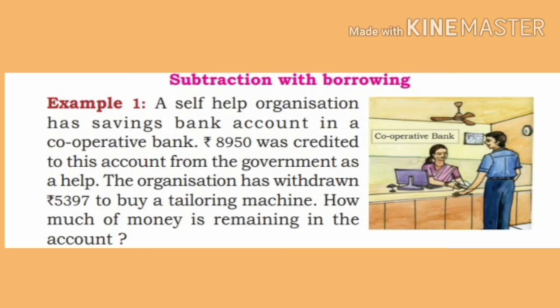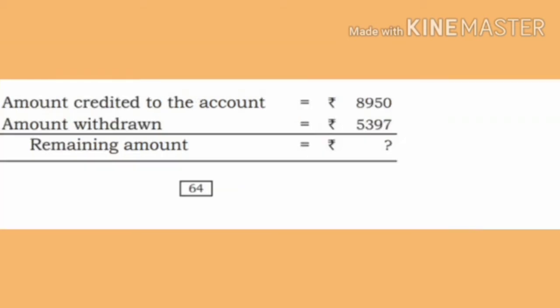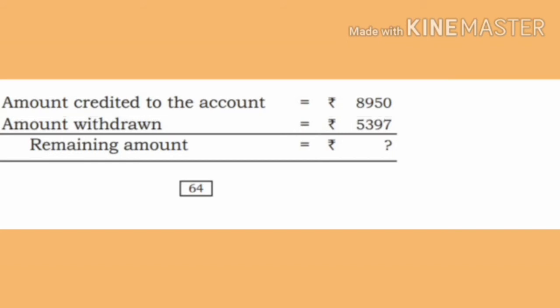Remember children, we subtract a small number from a big number. Amount credited to the account: Rupees 8,950. Amount withdrawn: Rs. 5,397.